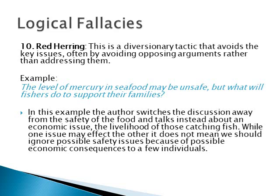A red herring is a diversionary tactic that avoids the key issues, often by avoiding opposing arguments rather than addressing them. For example: the level of mercury in seafood may be unsafe, but what will fishers do to support their families? In this example, the author switches the discussion away from the safety of the food and talks instead about an economic issue — the livelihood of those catching fish. While one issue may affect the other, it does not mean we should ignore possible safety issues because of possible economic consequences. The initial issue, food safety, has been diverted to a different topic.